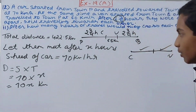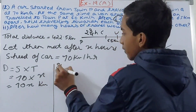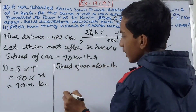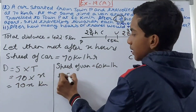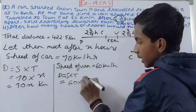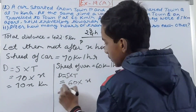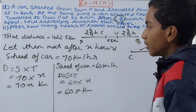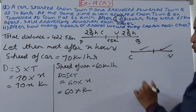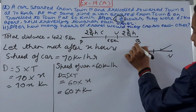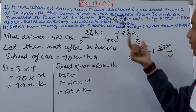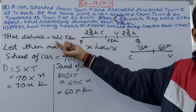For the van: speed = 60 kilometers per hour, time = x hours, so distance = 60 × x = 60x kilometers. The car travels 70x and the van travels 60x. When we add both distances, we get the total distance between the towns: 70x + 60x = 422.5 kilometers.